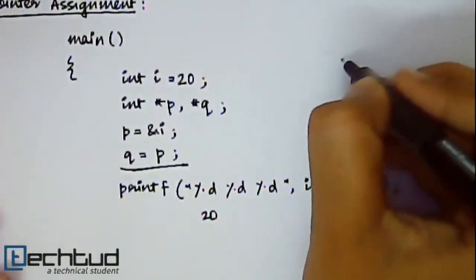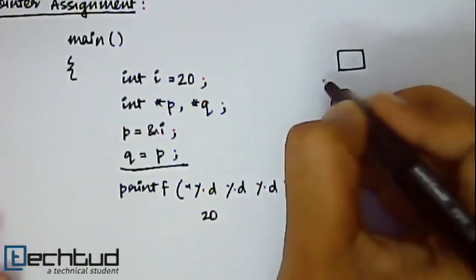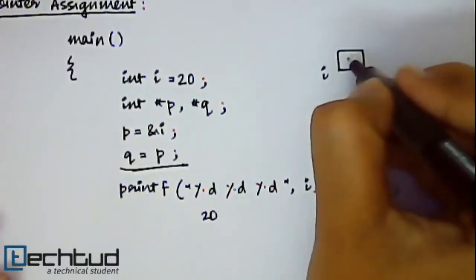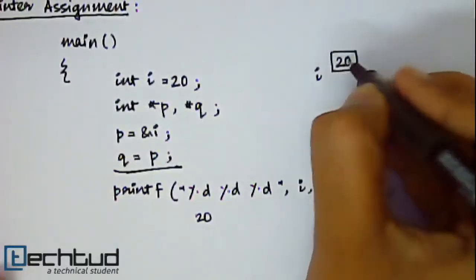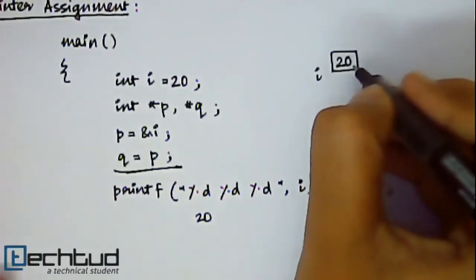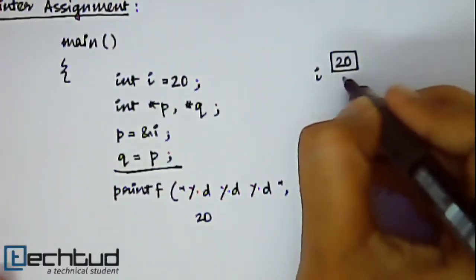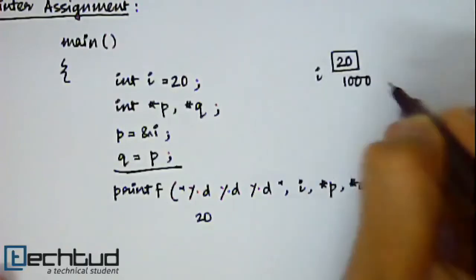Here if I show you how it is stored in the memory. The location of i, inside that location 20 has been stored. If address of this location is 1000.